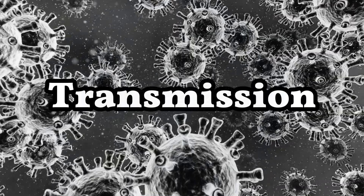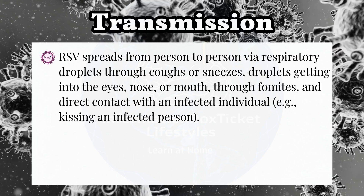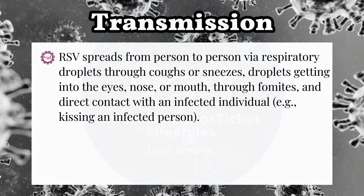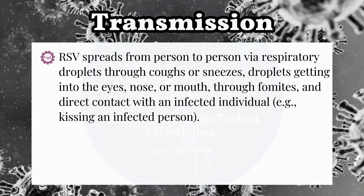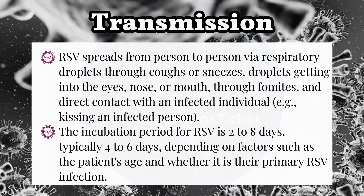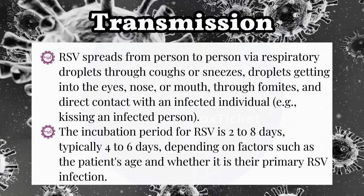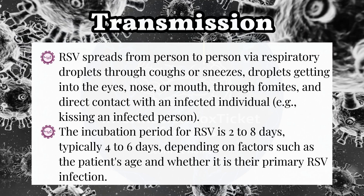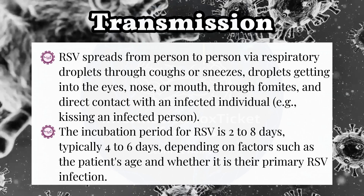Transmission of Respiratory Syncytial Virus (RSV). RSV spreads from person to person via respiratory droplets through coughs or sneezes, droplets getting into the eyes, nose, or mouth, through fomites, and direct contact with an infected individual, for example, kissing an infected person. The incubation period for RSV is 2 to 8 days, typically 4 to 6 days, depending on factors such as the patient's age and whether it is their primary RSV infection.